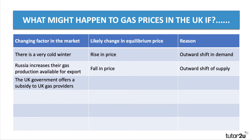Factor three: the UK government offers a subsidy to gas providers. A subsidy is some kind of financial support. If gas suppliers are being partly subsidised by the government, in theory the price is going to go down, because a subsidy effectively causes an outward shift of supply.